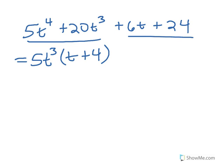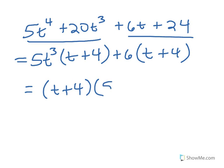Over on the right-hand side, take those two. What do they have in common? 6 and 24 have 6 in common. 6t divided by 6 is t, 24 divided by 6 is 4. Now what do those two terms have in common? They have t plus 4 in common. What's left? 5 of t cubed plus 6.